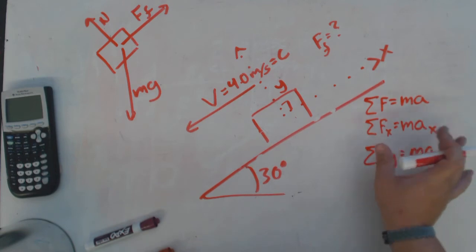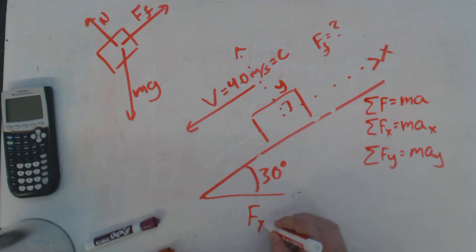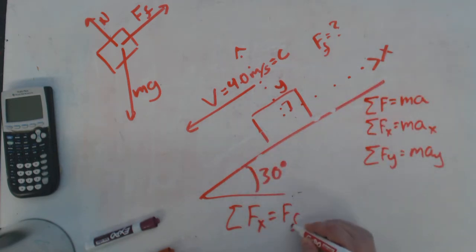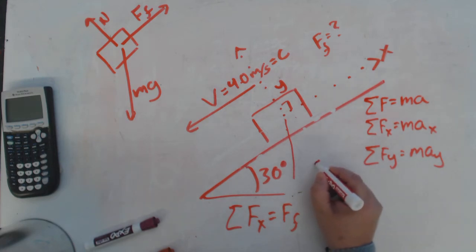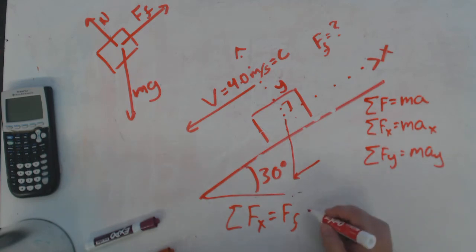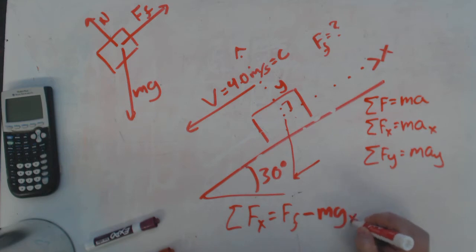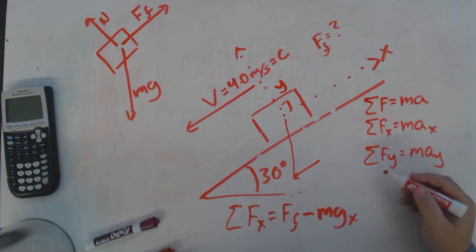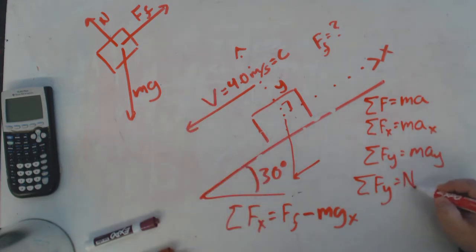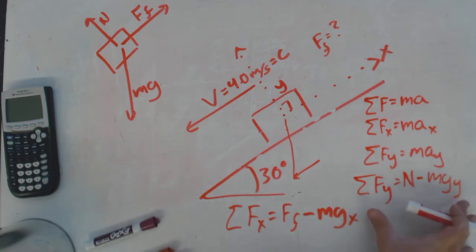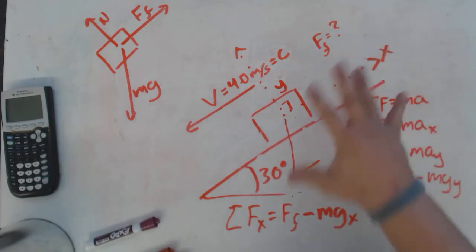Looking at my forces in the x-axis: I have the force of friction in the positive x-direction, and a portion of the weight pulling in the negative x-direction — so I write negative weight-x. For the y-axis: I have the normal force positive minus the weight in y. The y-axis equation won't contribute to solving this particular problem, though in more complicated problems it certainly would.